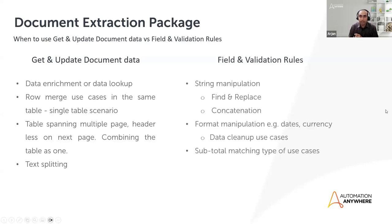For field and validation rules, these are the use cases: any kind of string manipulation, finding specific text and replacing it, concatenation, formatting dates or currencies, data cleanup, and matching — for instance, invoices can have multiple rows and you want to add them up to check if the total is correct. This is where you get a fair idea of which kind of data manipulation to choose — whether to use field rules or get and update document data.